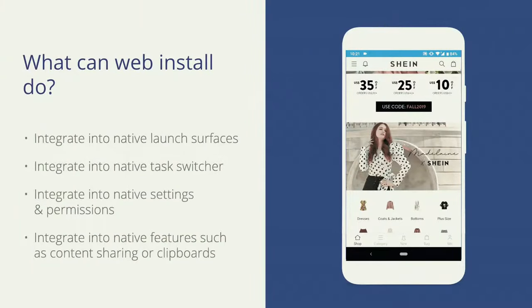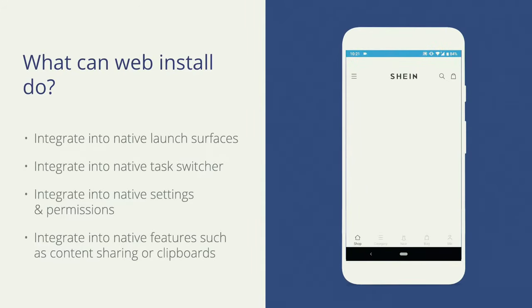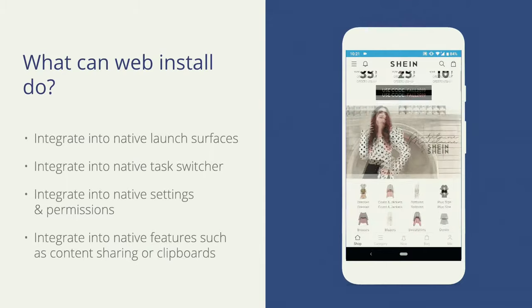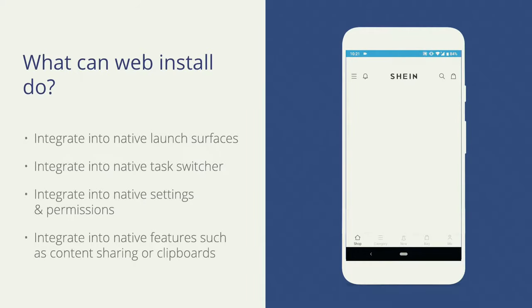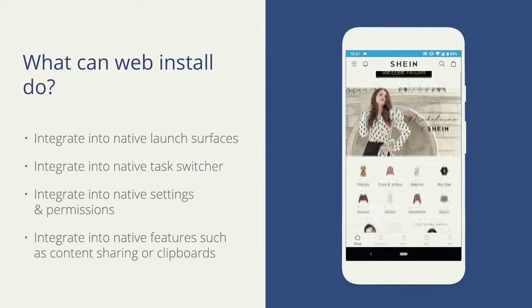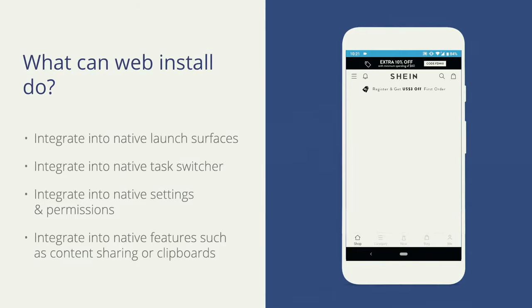Here is a summary of how install differs from bookmarks. Install should integrate into native launch surfaces and into the native task switcher — which can be a more natural affordance than browser tabs for switching between apps. Installed web apps are usually standalone, fully separated from the browser, offering access to the task switcher and launch from native surfaces. They also integrate into native settings and permissions, telling the user that this experience should be like any other on their device — which is a pretty high bar for web app design.